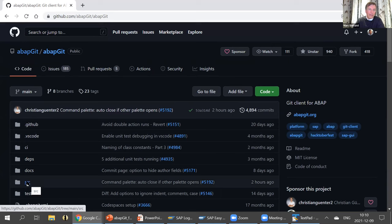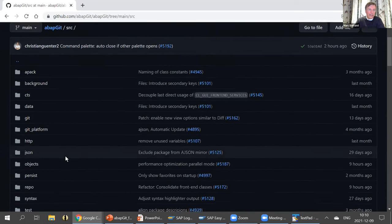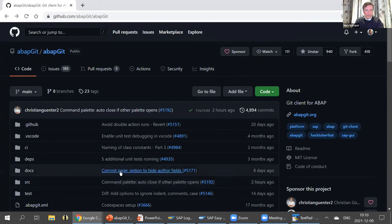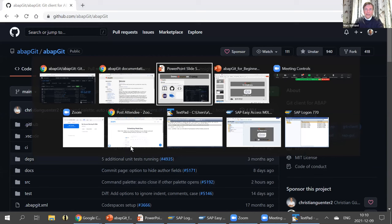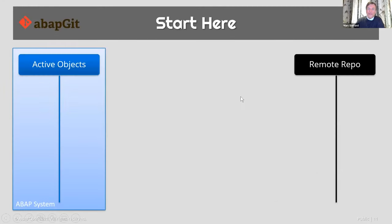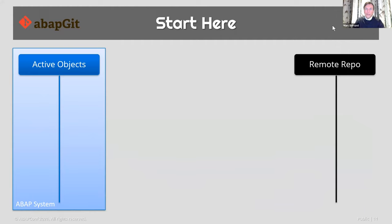The actual ABAP code for ABAPGIT projects you would find under the SRC folder. If you go in there, you can see there are other subfolders and then more files. Let's go back to the presentation and see what we do when we want to get started with ABAPGIT. At the very beginning, you have your own SAP system on one side — I always show it in blue in these graphics — and on the other side, a remote repository.